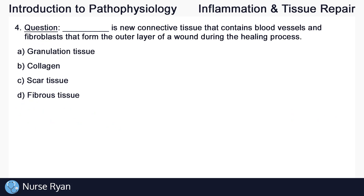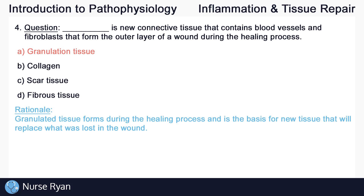Question number four: blank is new connective tissue that contains blood vessels and fibroblasts that form the outer layer of a wound during the healing process. The answer here is A, granulation tissue. Granulation tissue forms during the healing process and is the basis for new tissue that will replace what was lost in the wound.